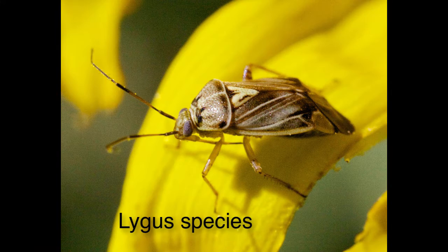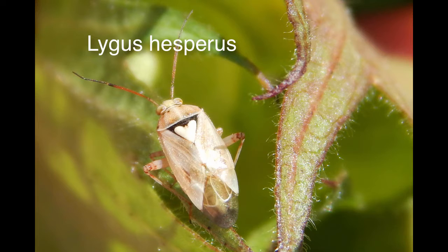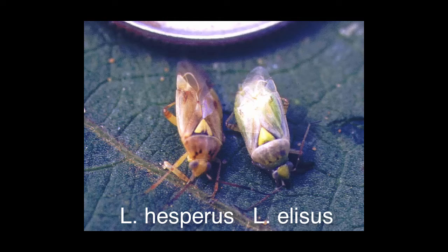So it's going to be real important when we go across this field to catch both adults and nymphs. And of course, tied with the lygus threshold are going to be square drop. On the High Plains, we have several different species of lygus. Unlike down in the south where it's mostly the tarnished plant bug, we've got Hesperus, obliquus, and a couple other lygus species.